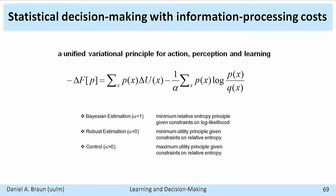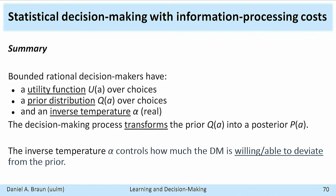To summarize: we have one variational principle where we vary the distribution P, and this same principle can describe action, perception, and learning. We can model Bayesian inference by taking the utility to be the log likelihood — the best P becomes the Bayesian posterior, enabling modeling of learning and perception. We can also use this for bounded decision making and for robust decision making. The framework has a utility function, a prior, a resource parameter alpha, and transforms the prior into the posterior.